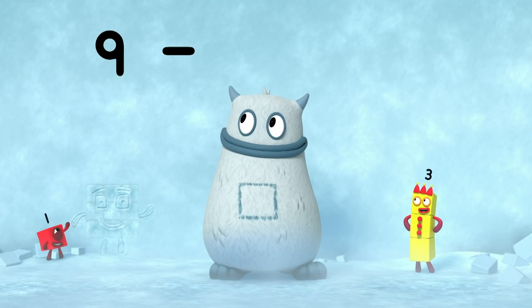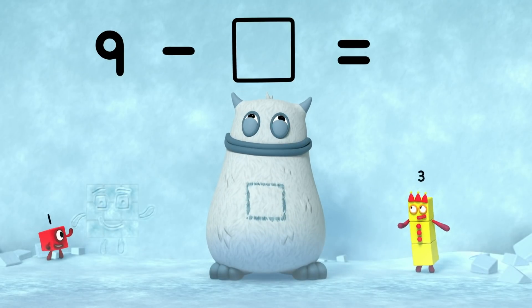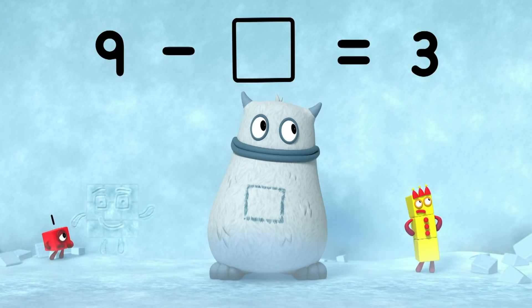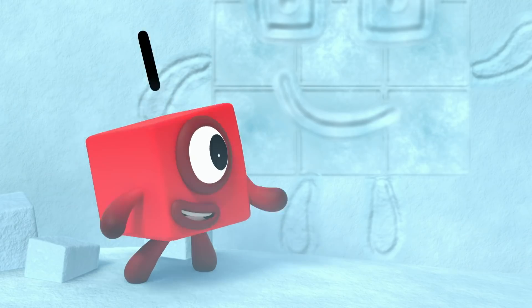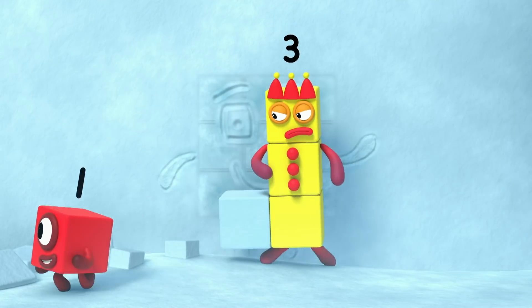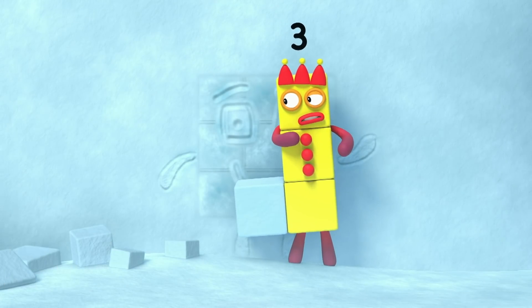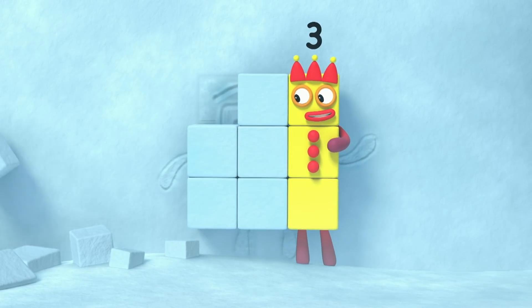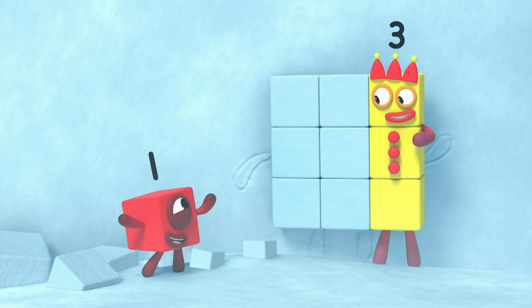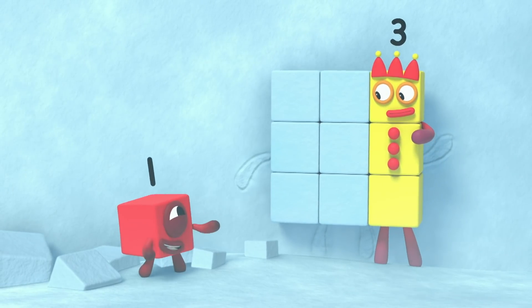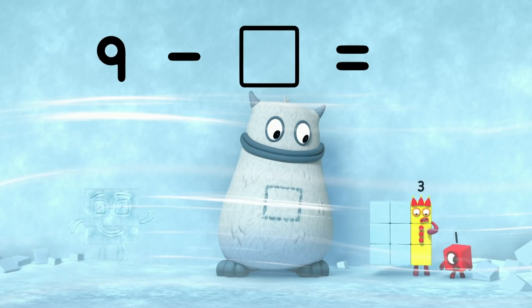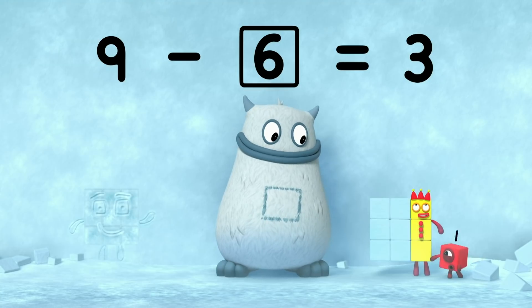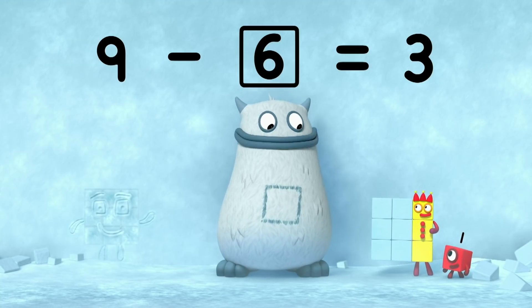Nine minus... yum... equals three! So what's missing? Come over here, three! Hey, that's one, two, three, four, five, six. There. So that's what's missing. Nine minus six equals three. And six is in your tum. Yum, yum. Well done.